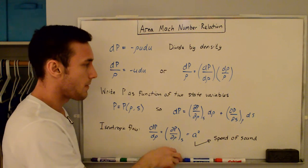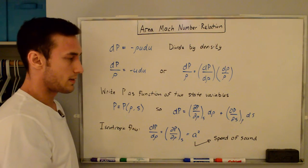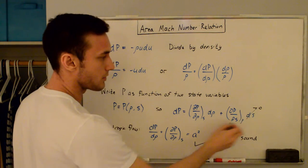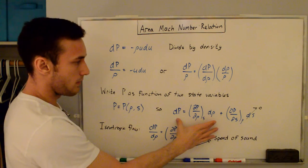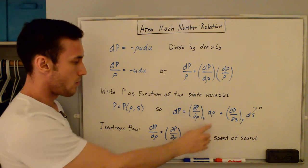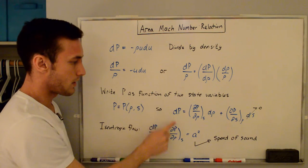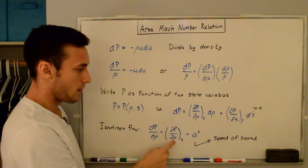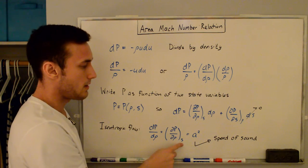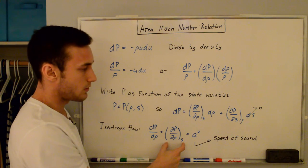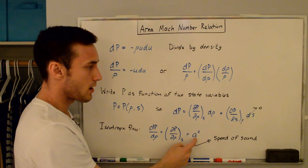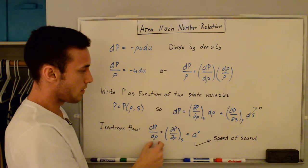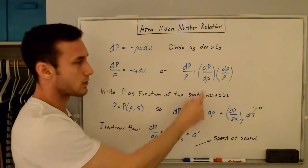If we have an isentropic flow, that means entropy is constant, so dS goes to zero and that term disappears. Dividing both sides by dρ, we get dP/dρ equal to the partial of P with respect to density at constant entropy. As shown in one of my other videos, this equals the speed of sound squared, a². So we can substitute a² in for this term.